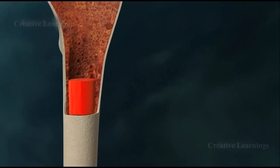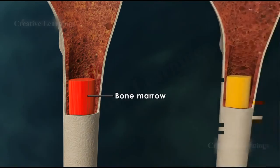Inside the bones can be found a soft spongy tissue known as bone marrow. There are two types of bone marrow: red and yellow.